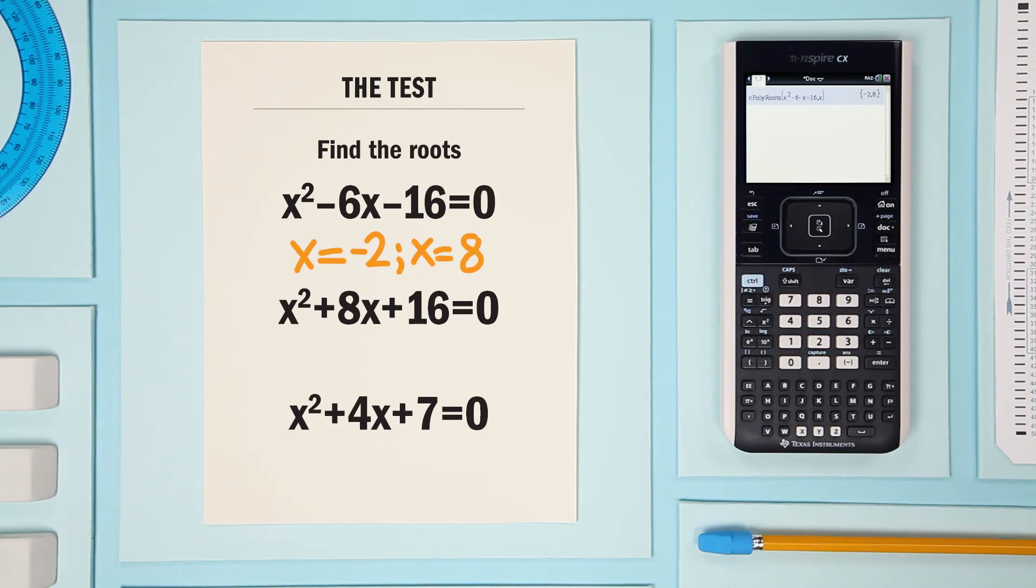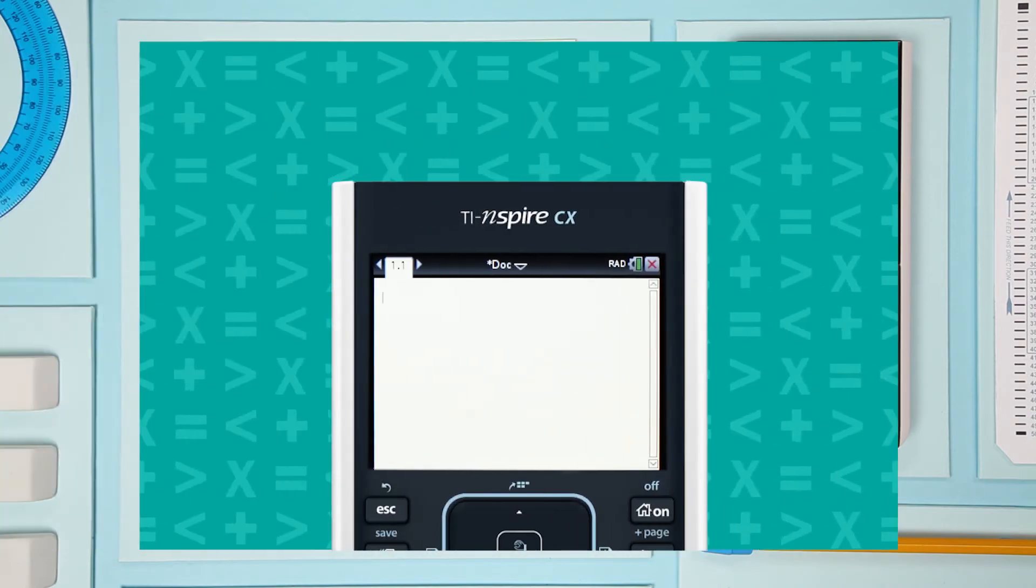Let's try that again. I'm going to go a little faster this time. Find the roots for x² + 8x + 16 = 0. Open the menu.